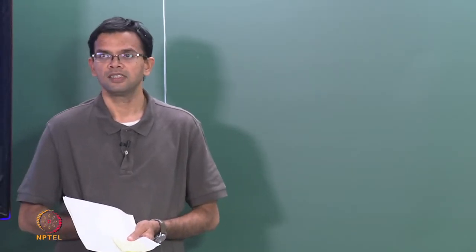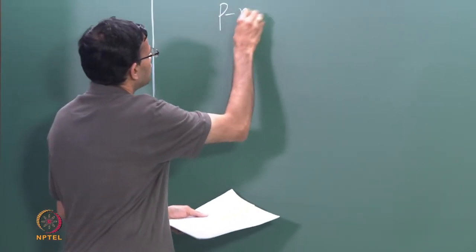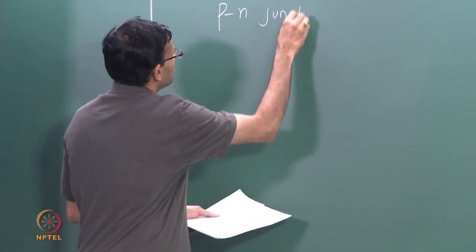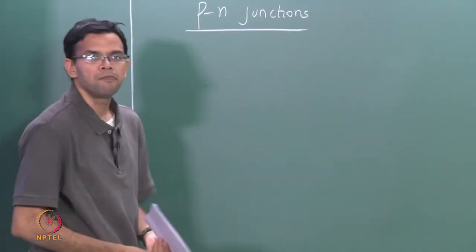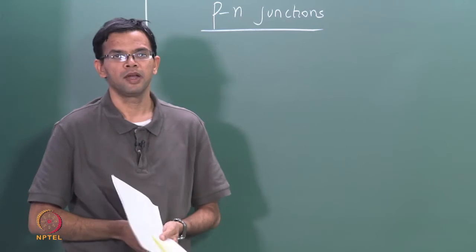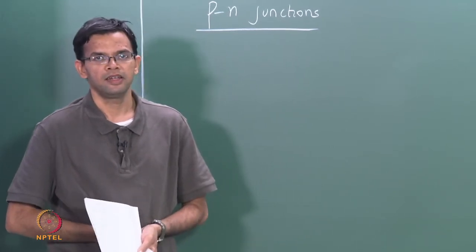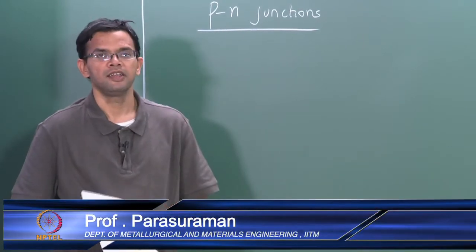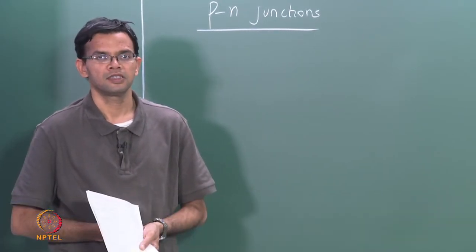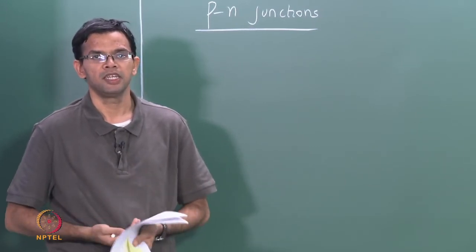Let us start with a brief review of last class. Last class we started looking at p-n junctions. A p-n junction is formed by combining a p-type semiconductor and an n-type semiconductor. We said that these junctions are ideal, so that there are no defects and both the p and the n-type are from the same material.